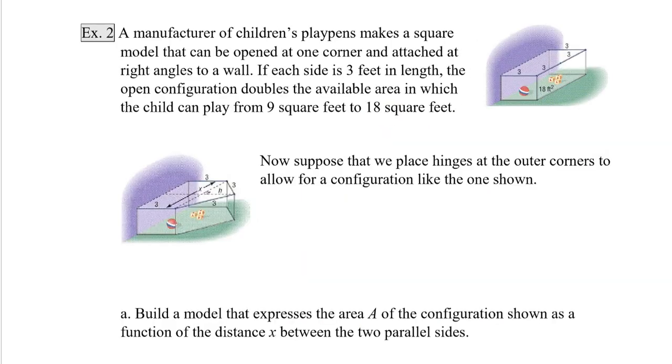Example 2, a manufacturer of children's play pens makes a square model that can be opened at one corner and attached at right angles to a wall. You can see it here in the figure. If each side is 3 feet in length, the open configuration doubles the available area in which the child can play from 9 square feet to 18 square feet. Now suppose that we place hinges on the outer corners to allow for a configuration like the one shown. So basically we have hinges here, here, and here, and we're squeezing the two opposite sides closer together so that these sides pop out.